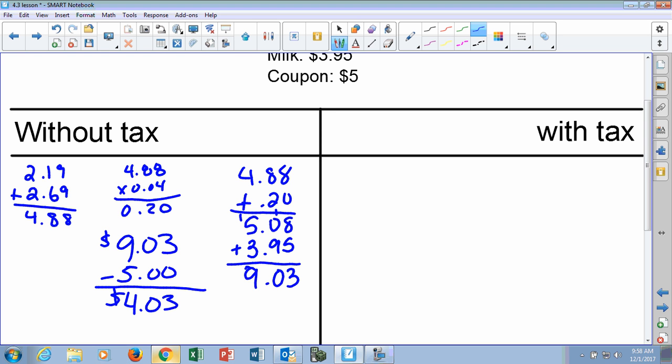Now if you wanted to include the... you could have set it up... you could have done it a lot of different ways. You could have did 1.04 times $4.88, right? That's if you wanted to include the tax with it, right? And then that's a total, right? And then you could add that to $3.95 and then also subtract $5. So you could have done it that way and figured it out and come up with the same answer.